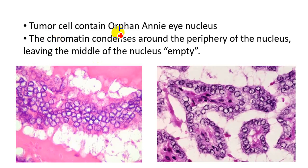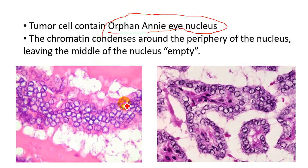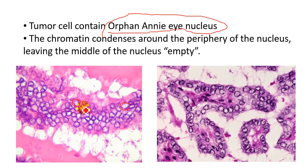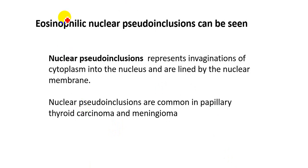The tumor cells contain Orphan Annie nuclei. An Orphan Annie nucleus is a special type of nucleus in which the chromatin condenses around the periphery of the nucleus, leaving the middle or central part of the nucleus empty — these are called optically clear nuclei. Orphan Annie was a comic character from the US-based comic 'Little Orphan Annie.' She made her debut into the textbook of pathology because of the resemblance of her eyes with the nuclei of papillary carcinoma of the thyroid gland.